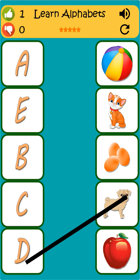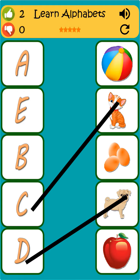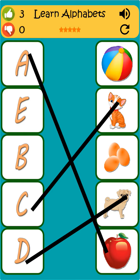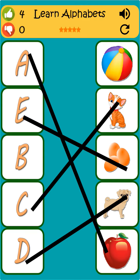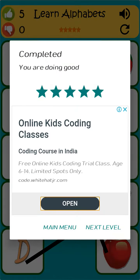E is for dog. C is for cat. A is for apple. E is for egg. B is for ball.